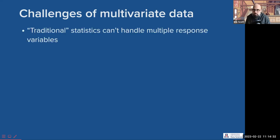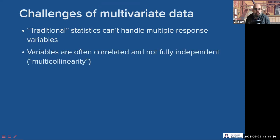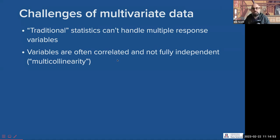First of all, there's the challenge of just handling multiple response variables. Variables are often strongly correlated with each other and not fully independent. Plant metabolites, for example — often many of those metabolites are from the same metabolic pathway, so they're not fully independent. This situation is called multicollinearity, which can cause problems for a traditional regression analysis.